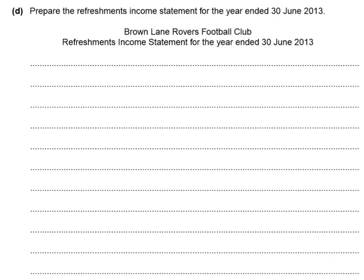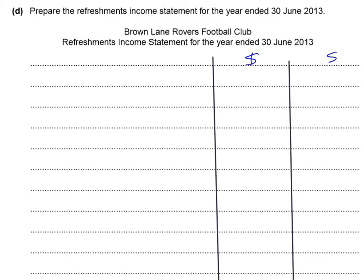Now moving to the next requirement: prepare a refreshment income statement. There are two types of income statements in club accounts. The first is the refreshment income statement — the examiner may use the word refreshment, cafe, cafeteria, or canteen. The format is just like a simple income statement for a commercial business: Sales, less Cost of Sales (Opening Inventory + Purchases − Closing Inventory) = Gross Profit.